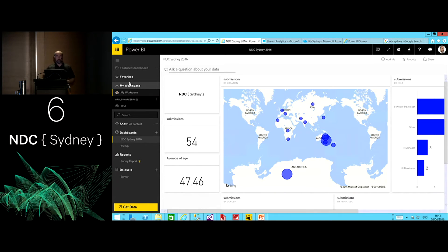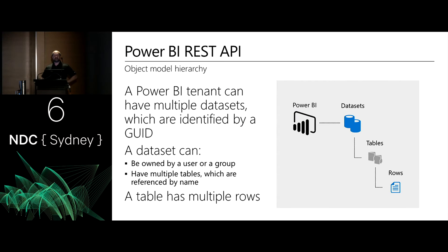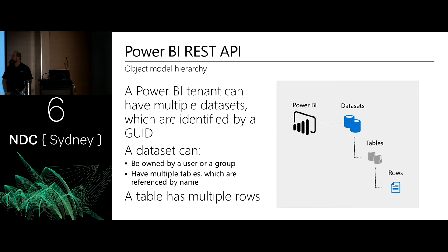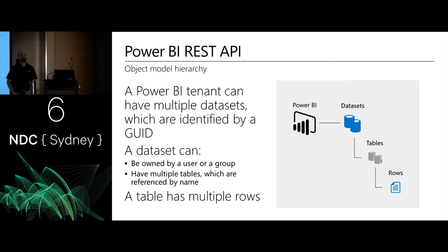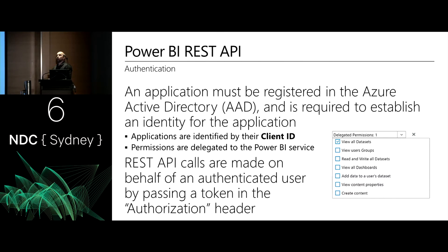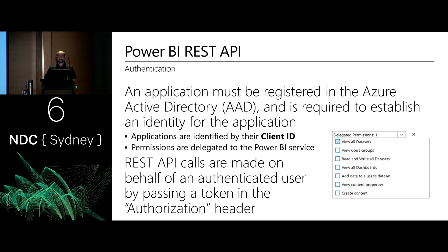Within the workspace — whether personal or group — they are structurally identical. You have a collection of data sets; data sets have collections of tables; tables have collections of fields; and within these, we have rows of data. In order to work with the REST API, you need to register an application, grant it privileges, and then that application's client ID would be used to authenticate all calls made when using the REST API.